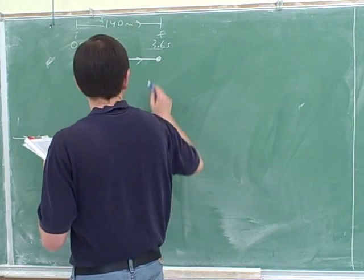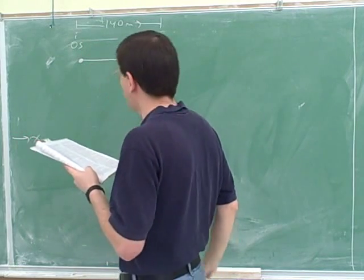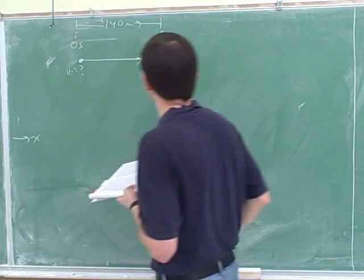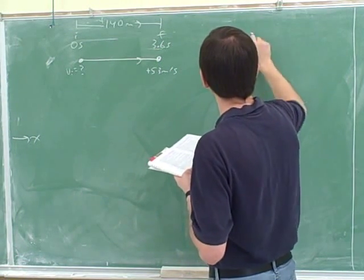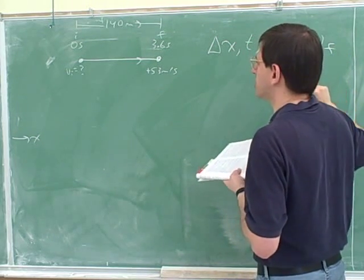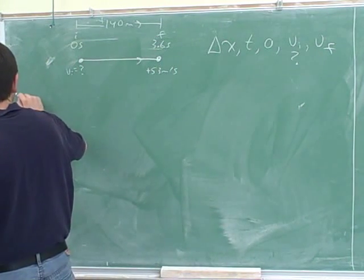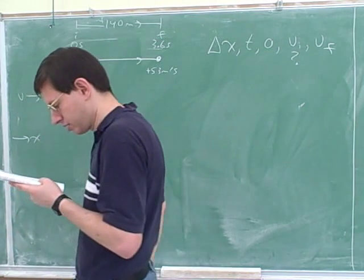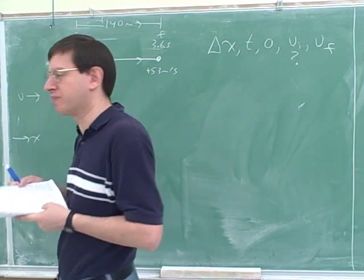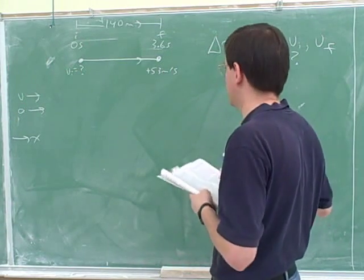It's moving at 53 meters per second at the end, and again I'll call that positive. The question is: what is its speed at the beginning? I should also write the direction of the velocity — the velocity is to the right. And what's the direction of the acceleration? To the right as well, because they're implying in the problem that we're speeding up. If we're speeding up, then the acceleration and the velocity should be in the same direction.